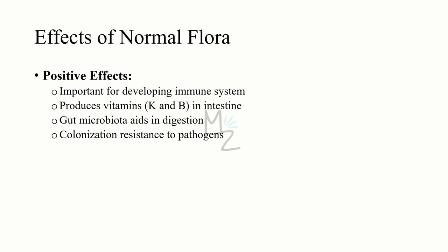Effects of normal flora can be positive and negative. Positive effects: normal flora is important for developing the immune system. It produces certain vitamins like vitamin K, which helps in coagulation by producing certain clotting factors, and vitamin B, which is important in digestion. The gut microbiota aids in digestion — it can help digest certain saturated fatty acids and lipids. It can also provide colonization resistance to pathogens, meaning our normal flora will not let foreign pathogens form colonies in the body.